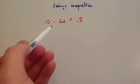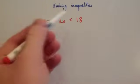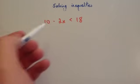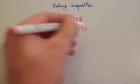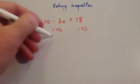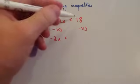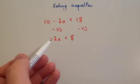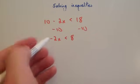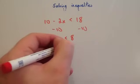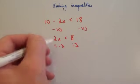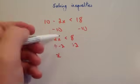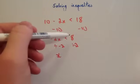Okay, in this inequality we've got 10 subtract 2x is less than 18. Whenever you want to solve an inequality, you want to get x's on one side and numbers on the other. So let's take away 10 from both sides. Taking away 10 from this side leaves you with minus 2x, and on the other side you've got 18 take away 10 which is 8. So now you've got minus 2x is less than 8, and you want to divide both sides by minus 2.